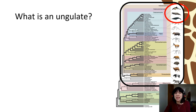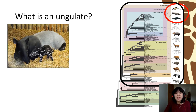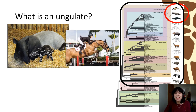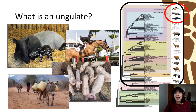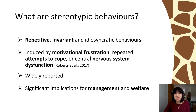We keep ungulates in a broad variety of captive environments and we do so for lots of different reasons, including in zoos, safari parks and sanctuaries, for sports and leisure, for production, and as working animals. The second term we should define is that of stereotypic behaviour, or stereotypy as it's often shortened to.